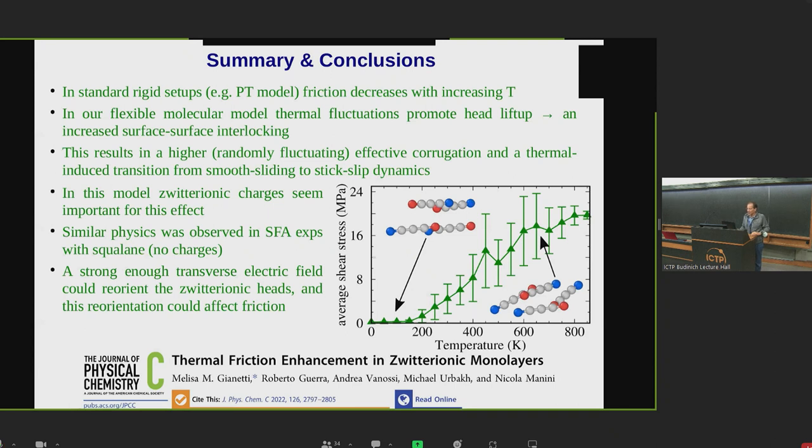I'm basically done. We know that in standard rigid setups, friction tends to decrease with temperature, and we invented a molecule where things can go differently. Thermal fluctuation can promote these chains to pop up and intersect more and create some sticking situation and therefore increase friction. Basically, one forms thermally fluctuating sticking configuration which increase the effective corrugation and therefore promotes stick-slip against smooth sliding. In our model, it seems that the charges on the zwitterionic molecules are important. We tested what happens without them, and this effect gets reduced quite a lot. However, we are aware of those experiments where squalane was used, which is a non-polar molecule, and a similar effect was also observed. So perhaps the situation is more general than our model. Also, now we are trying to see what an electric field could do, although the electric fields that we need to put in for any effect to be seen are quite big compared to what is practically possible to do in experiments.